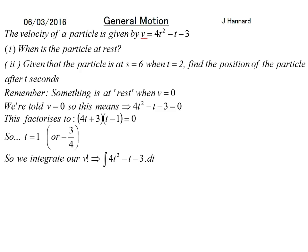We integrate our v to get s for the second bit because given that the particle is at s = 6 when t = 2, find the position of the particle after t seconds. So we integrate v with respect to t. Add 1 to the power, divide by the new power and you end up with 4/3 t³ - 1/2 t² - 3t + C.